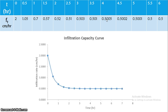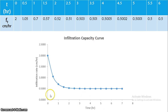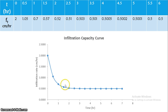We have a graphical plot — an infiltration capacity curve, also called the infiltration rate curve. We plot the computed Ft values over time to show the shape of the infiltration capacity curve.